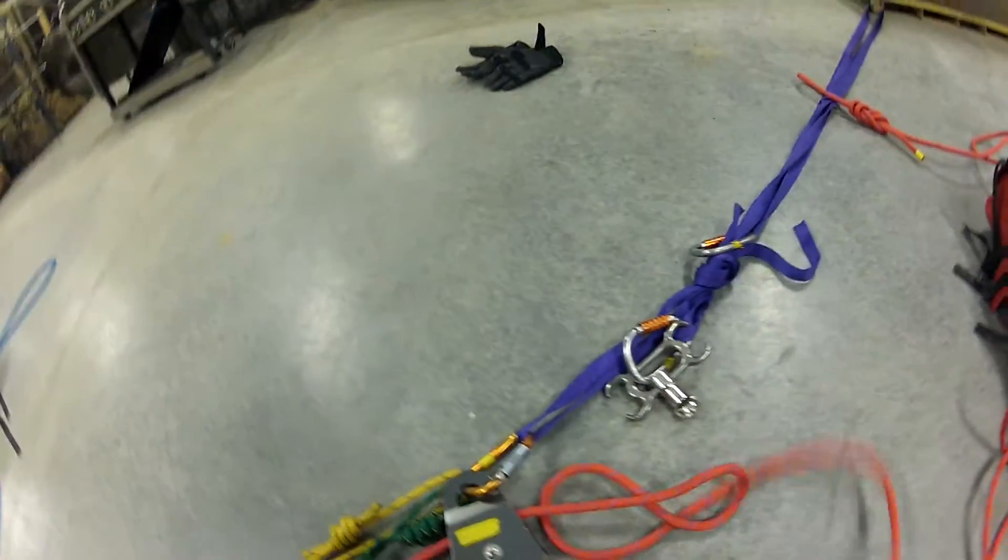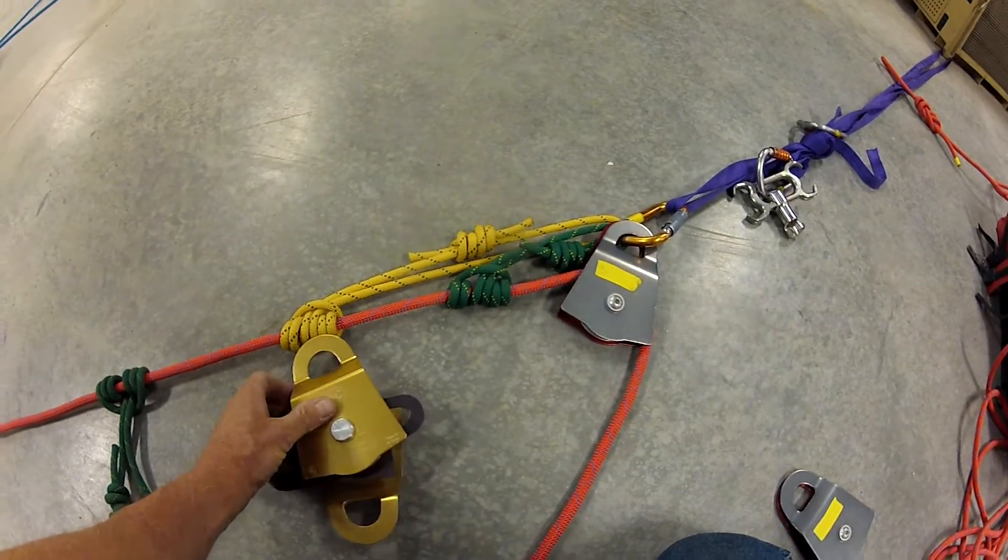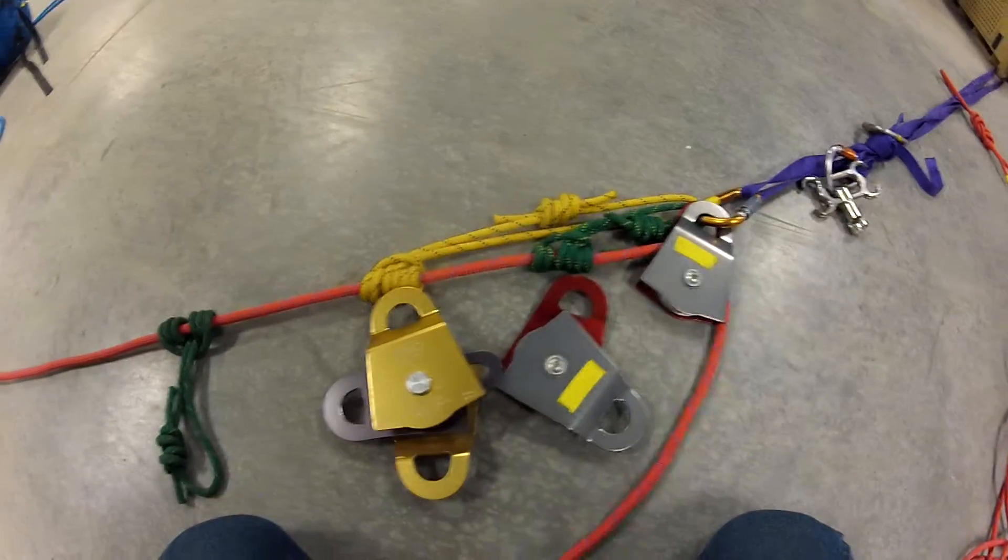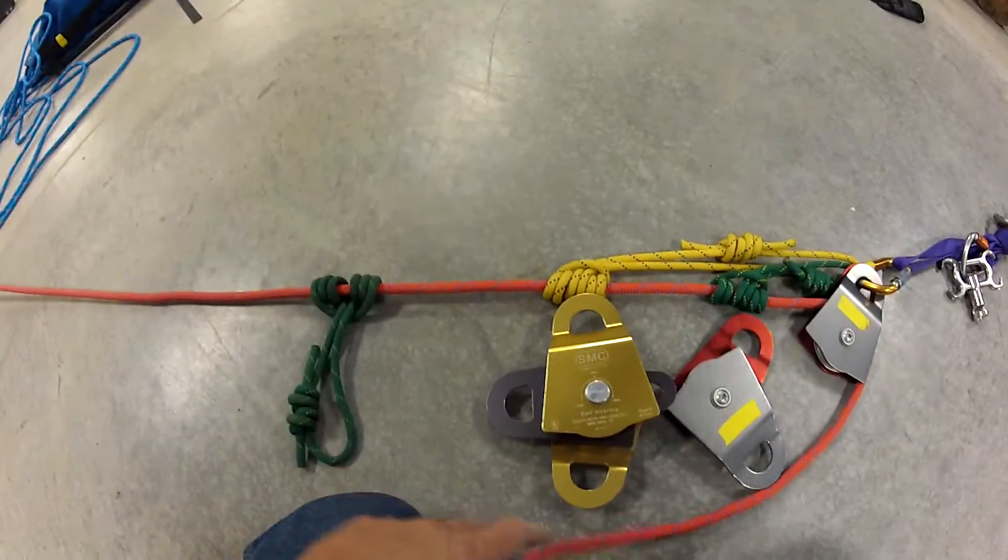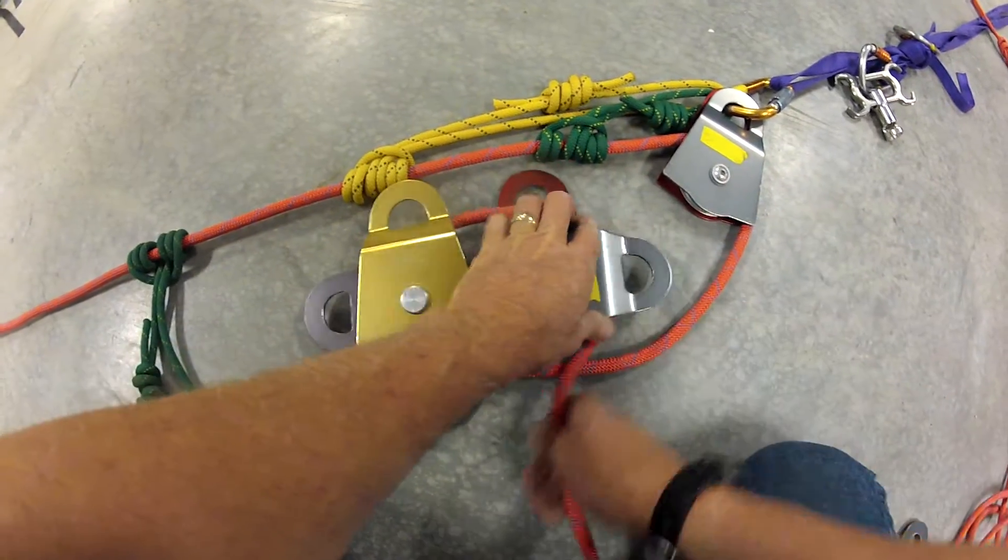Now it's time to build our 5-to-1. Alright, so down here, we're going to build this really slow, or really small, and this is the way I like to do it. All I'm going to need is my double and this. So, I come down, I circle around to the outside, take my bottom pulley, and then my top pulley here.